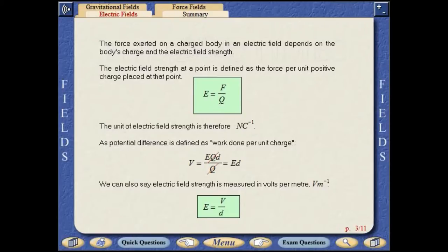The electric field strength at a point is defined as the force per unit positive charge placed at that point. The unit of electric field strength is therefore newtons per coulomb.